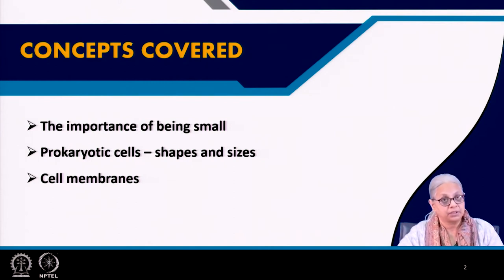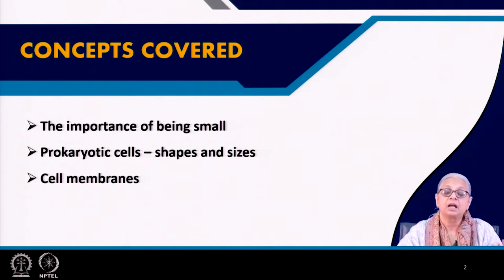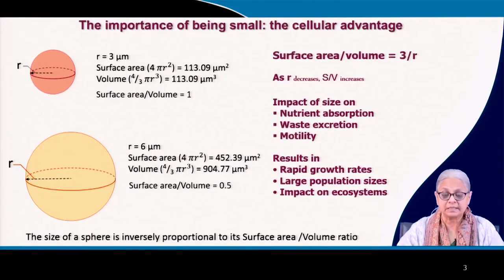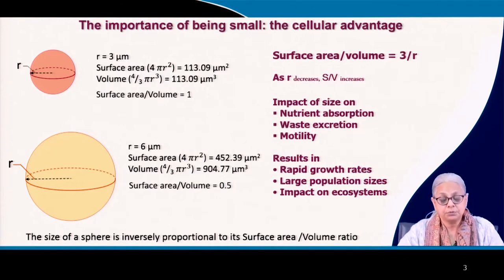Then we come to prokaryotic cells — what are the different shapes and sizes that we see in the environment, and the nature of cell membranes, because that determines how they take in nutrients and how they excrete waste into the environment. Let us start with the cellular advantage, which is also the importance of being small for these bacteria.